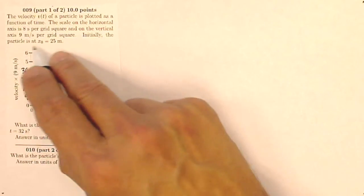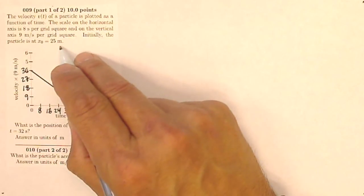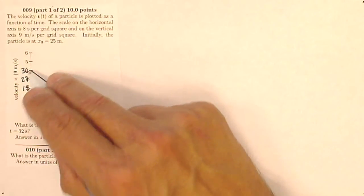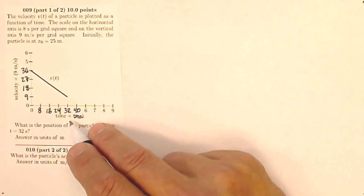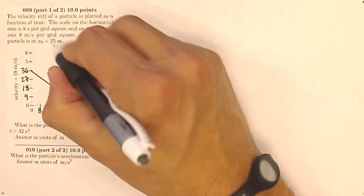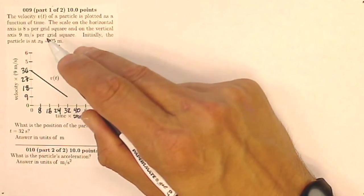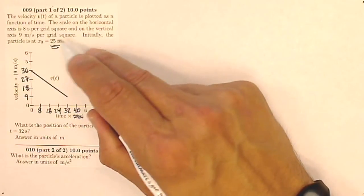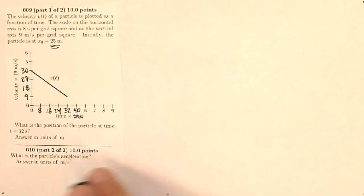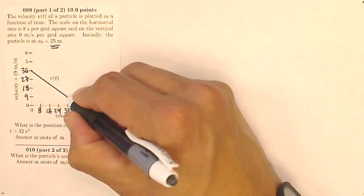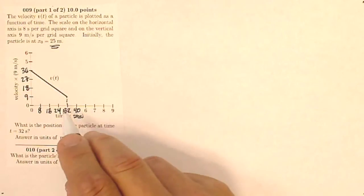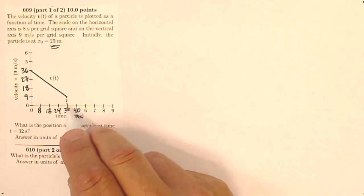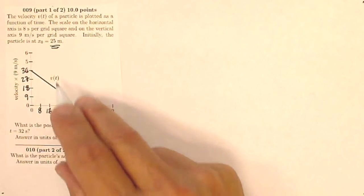It also says initially the particle is at x0 is 25 meters. So I know that at the beginning of time, since I can't look at this velocity time graph and figure out initial position, I know that my initial position is 25 meters. So if I find some change in position, I'm going to have to add 25 meters because it started already at the 25 meter mark. It asks, what is the position of the particle at a time of 32 seconds? So again, that's right here, 32 seconds. Where is it after 32 seconds moving at this velocity over this amount of time?